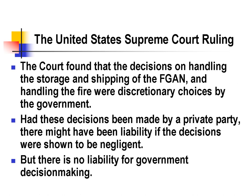In this specific case, the Court found that the decisions on handling, storage, and shipping of the fertilizer grade ammonium nitrate, and how the fire was later handled by the Coast Guard, were the classic discretionary choices by the government. Had these same decisions been made by a private party — say a shipping company contracted to move fertilizer — there might have been liability. This was clearly a hazardous activity, if not an ultra-hazardous activity, and had this been a private tort claim, it very likely would have succeeded. This is a pattern we'll see in these mass tort claims under the Federal Tort Claims Act: there might have been liability for private parties, but not for the government.